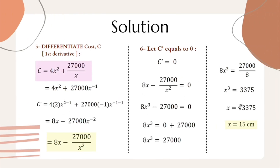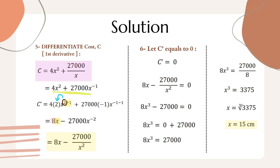We differentiate the cost equation C = 4x² + 27000x⁻¹. Rearranging, we apply the power rule: bring down the power of 2 to get 8x, and differentiate 27000x⁻¹ to get −27000x⁻². So the first derivative is C' = 8x − 27000/x².